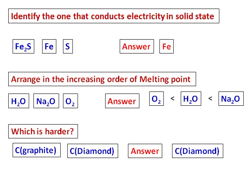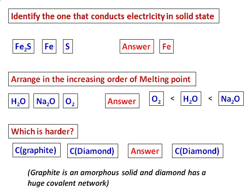Which is harder, carbon graphite or carbon diamond? Obviously carbon diamond, because it's one of the hardest compounds. Graphite is basically an amorphous solid, whereas diamond has a huge covalent network. Both are carbon, but carbon graphite is soft and can conduct electricity, while diamond is very hard and does not conduct electricity.